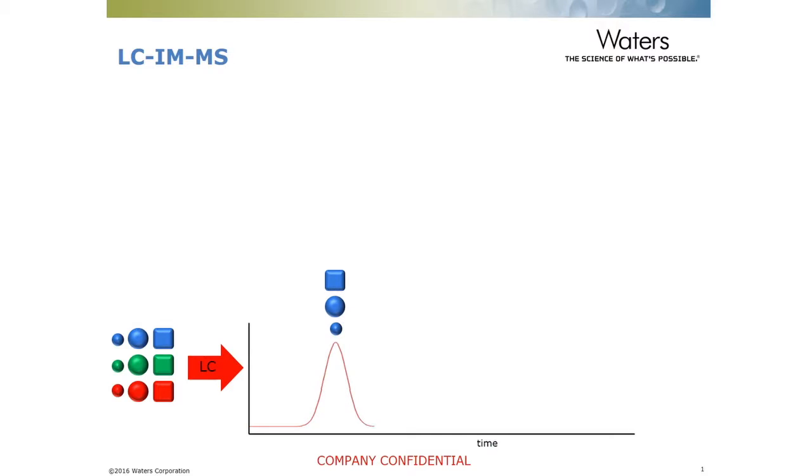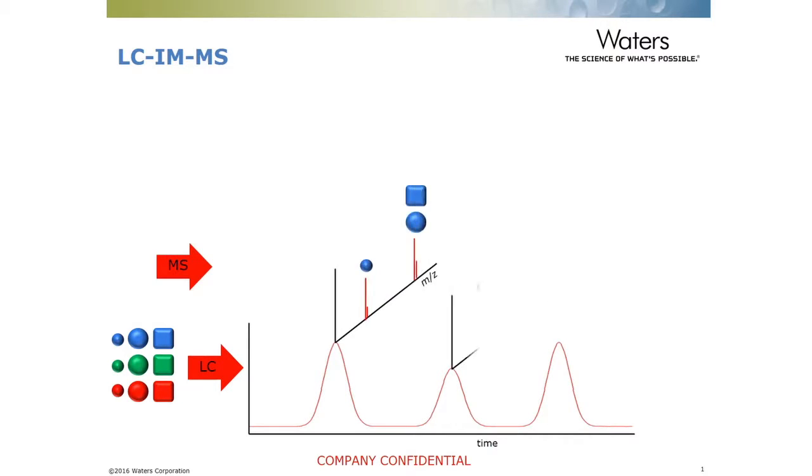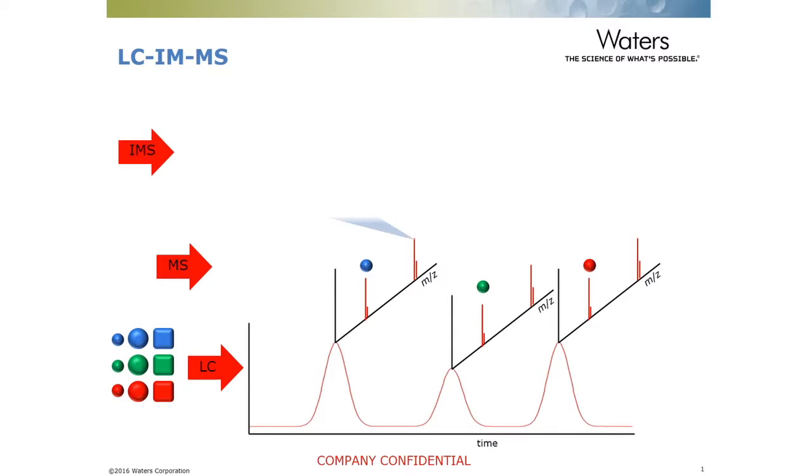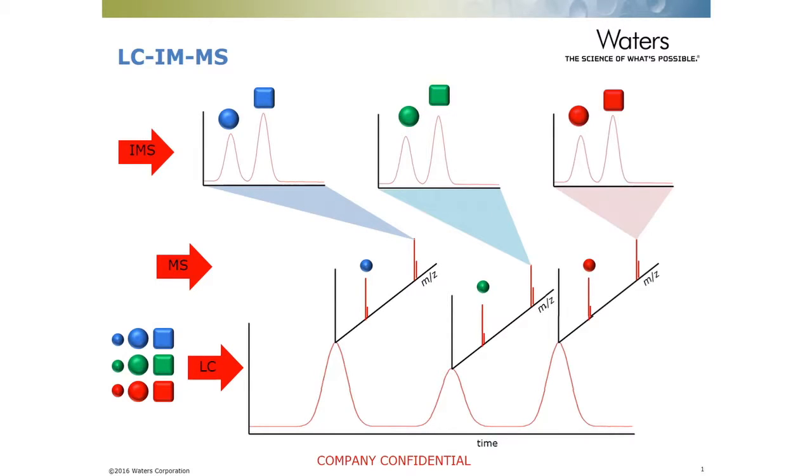So we're getting complementary information to regular mass spec experiments. One of the beauties of mobility separation is that it's fast — it takes place on the tens of milliseconds timescale because it's occurring in the gas phase. This is obviously much shorter than typical LC experiments, so we can easily sample a chromatographic experiment by running many mobility experiments across the peaks that occur in LC.